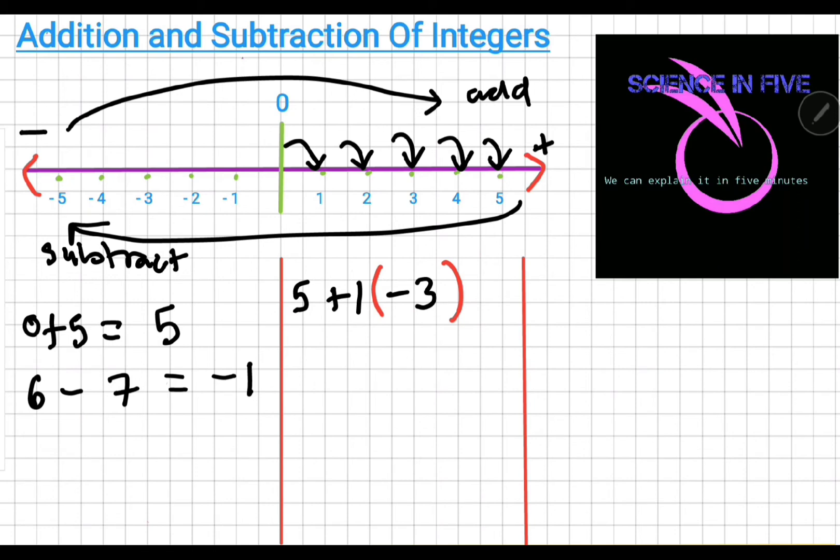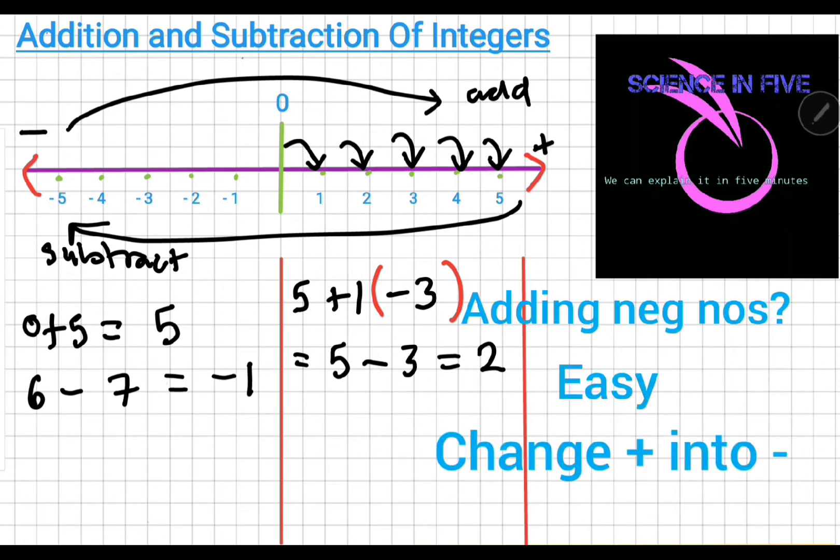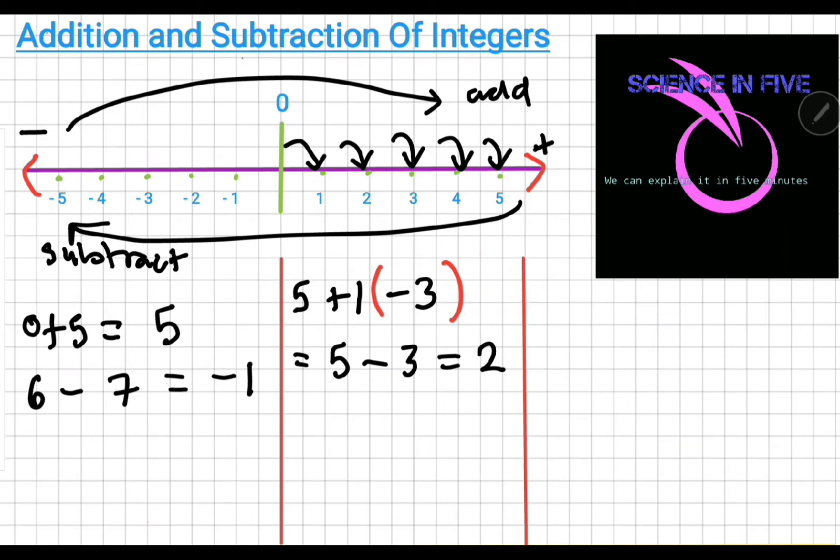So, what's a positive one times a negative three? Well, we say the positive times a negative always gives you a negative. So, this answer becomes two. So, whenever you're adding a negative number, change the addition sign to a subtraction sign and then move on the number line.